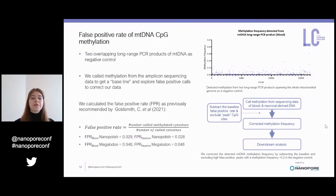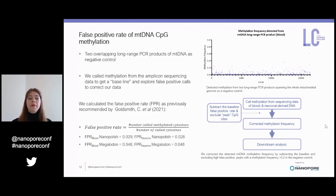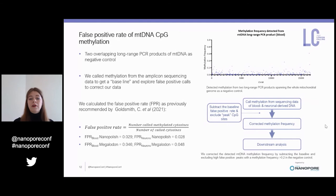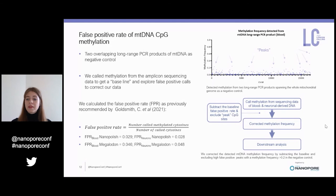We then evaluated the false positive rate of mtDNA CpG methylation detection for both Nanopolish and Megalodon. We prepared two overlapping long-range PCR products spanning the whole mitochondrial genome, and called methylation from the amplicon sequencing data to establish a baseline. The false positive rate — described by Goldsmith et al. — is the number of called methylated cytosines divided by the total number of called cytosines per tool. We subtracted this baseline false positive rate from our detected methylation frequency, excluded distinct peaks in the amplicon data, and removed the corresponding CpG sites from our blood and neuronal samples before continuing with downstream analysis.